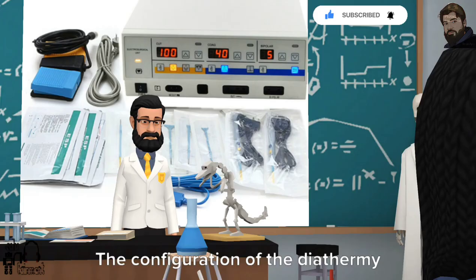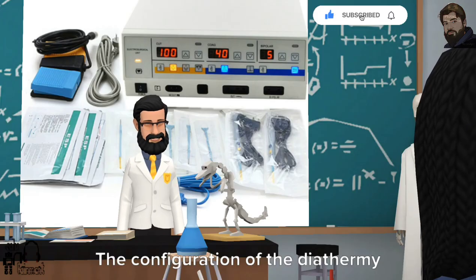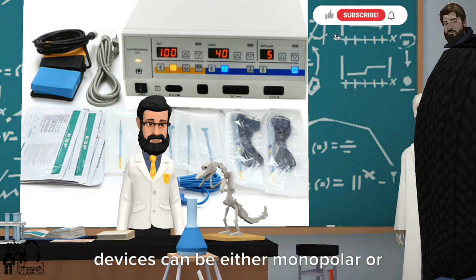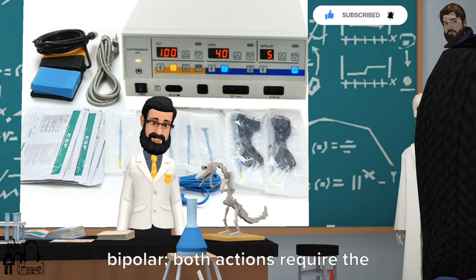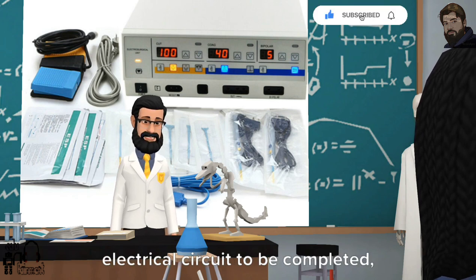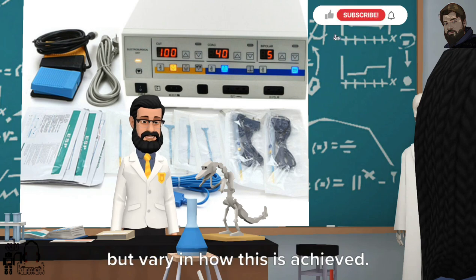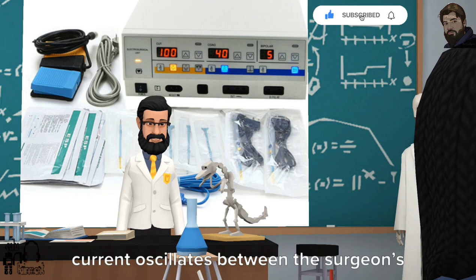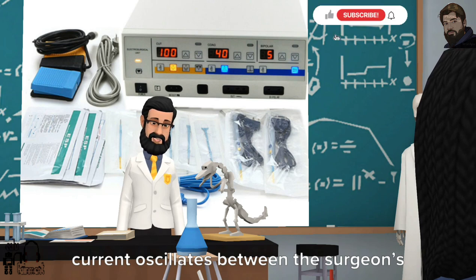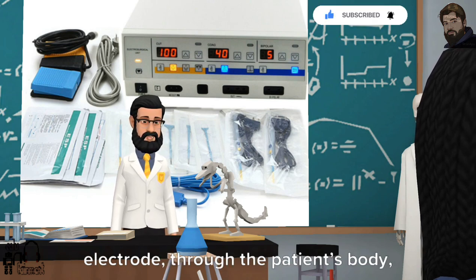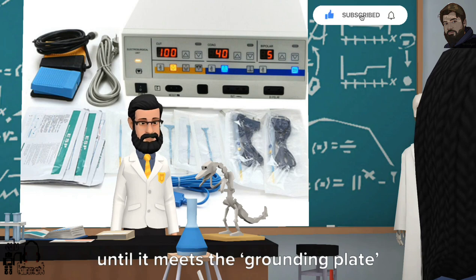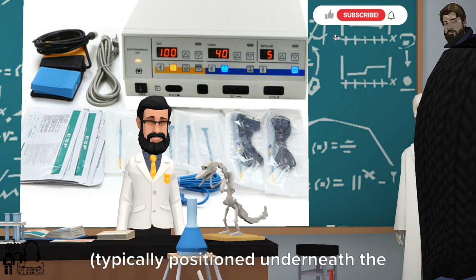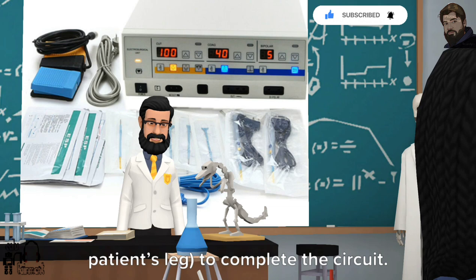What is monopolar? The configuration of the diathermy devices can be either monopolar or bipolar. Both actions require the electrical circuit to be completed, but vary in how this is achieved. In monopolar action, the electrical current oscillates between the surgeon's electrode, through the patient's body, until it meets the grounding plate, typically positioned underneath the patient's leg, to complete the circuit.